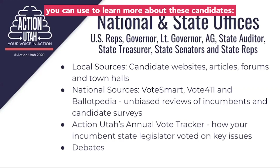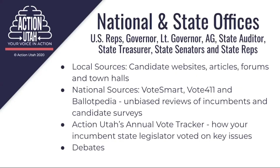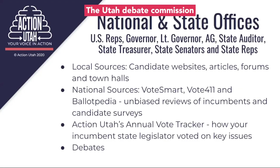There are several sources you can use to learn more about these candidates, including local sources like the candidates' websites, articles, forums, and town halls. There are national sources like votesmart.org, vote411, and Ballotpedia that offer unbiased reviews of incumbents and candidate surveys. You can also use Action Utah's annual vote tracker, which will show you how your incumbent state legislators have voted on key issues over the years. Lastly, you can learn about the candidates through debates.